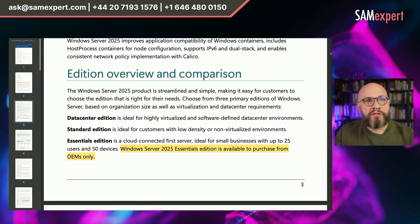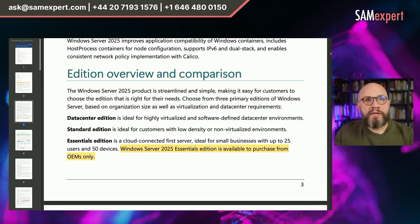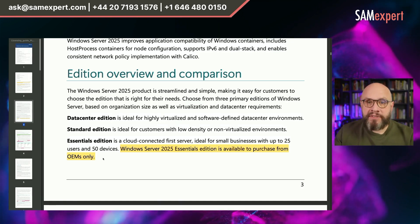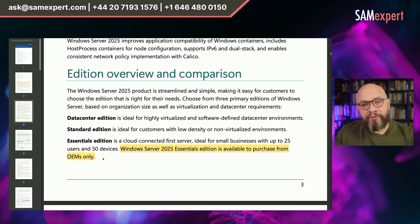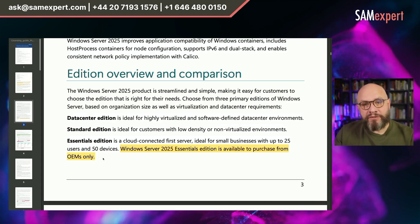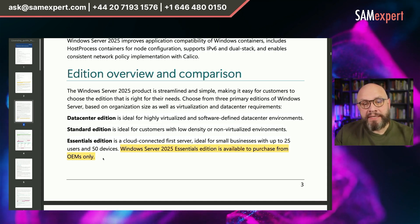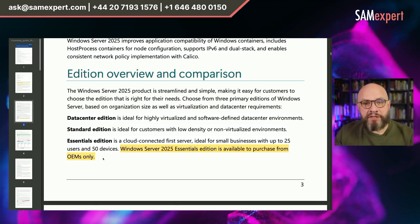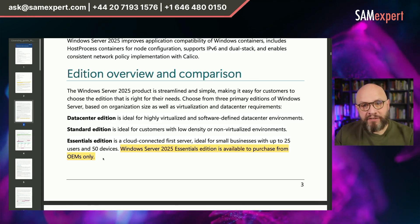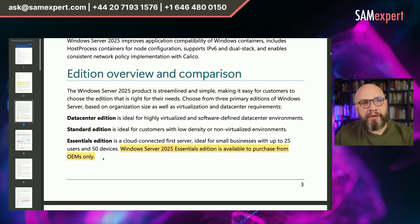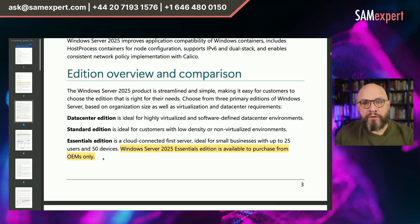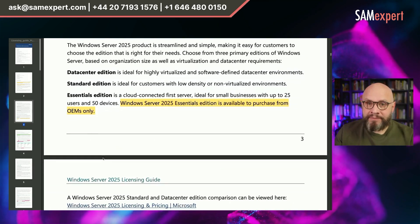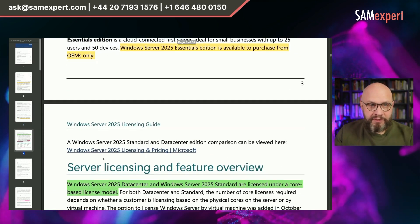Windows Server 2025 Essentials Edition is available to purchase from OEMs only. We actually made a mistake in our training — I said that the last version of Windows Server Essentials is 2019. That is the last version available through volume licensing channels. If you want to buy Windows Server Essentials 2025, you have to buy it pre-installed on the hardware. There's no other option. So it exists, but you can't buy it through volume licensing channels.